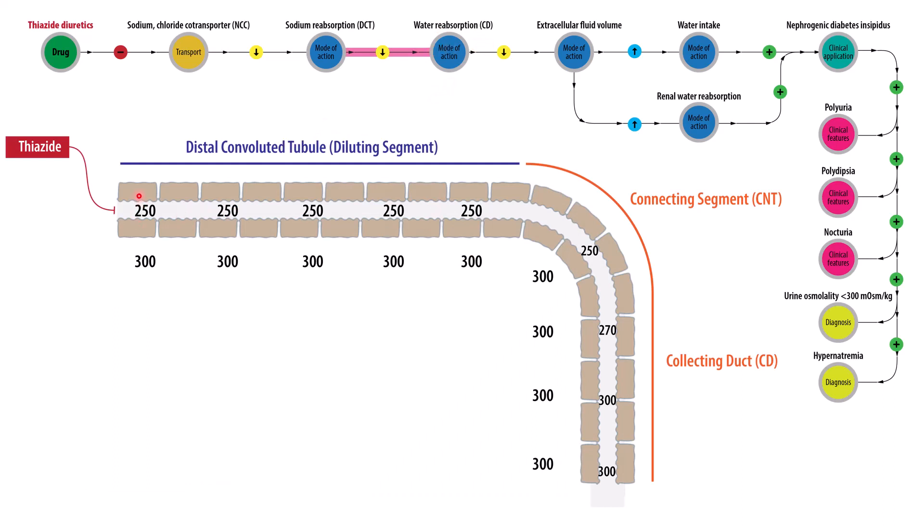Here we have an illustration of a tubule with the distal convoluted tubule segment or diluting segment located here. And then the connecting segment and collecting duct located just downstream. And as a reminder, the distal convoluted tubule is permeable only to sodium chloride, while the connecting segment and collecting duct are permeable to sodium chloride and water.